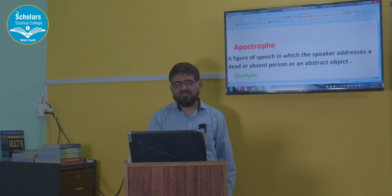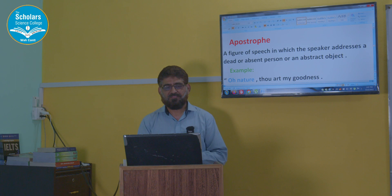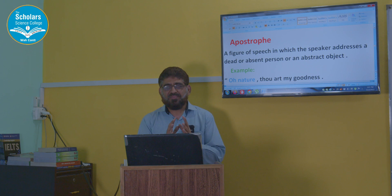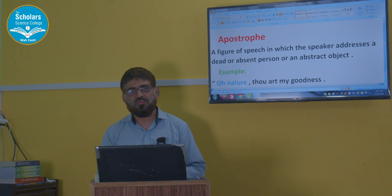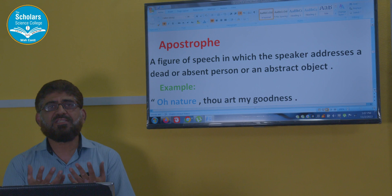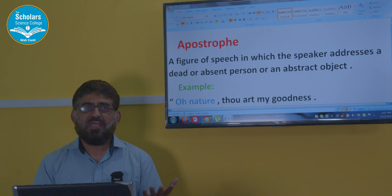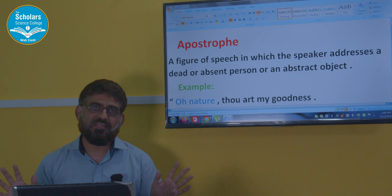Apostrophe — you also use apostrophe in punctuation, but here it is a figure of speech, a literary or poetic device. Apostrophe is a figure of speech in which the speaker addresses a dead or absent person or an abstract object. For example, 'Oh Shakespeare, you are my favorite.' Shakespeare is dead but we are addressing Shakespeare — that is apostrophe.